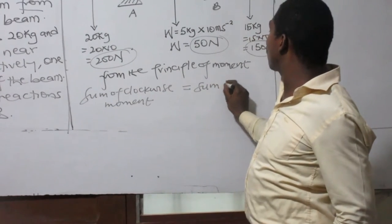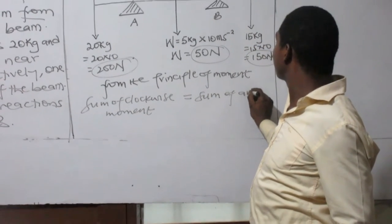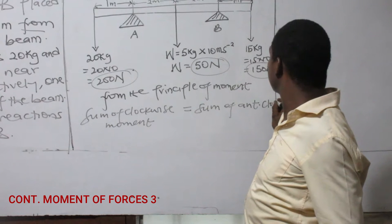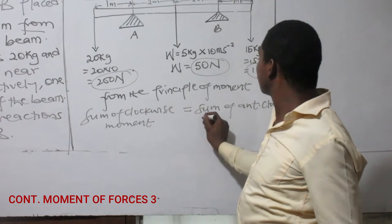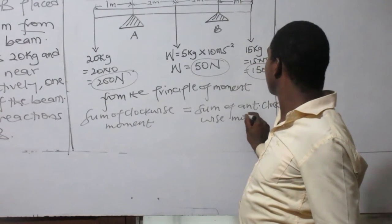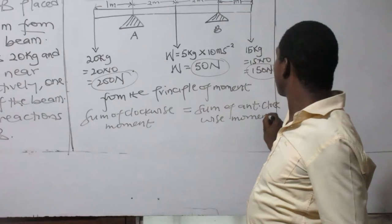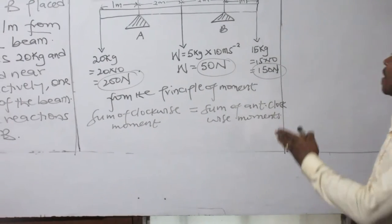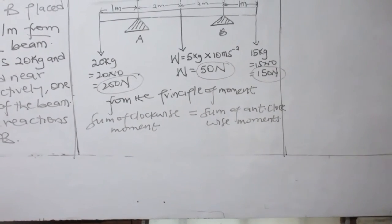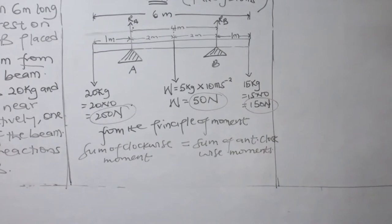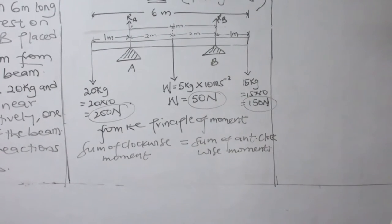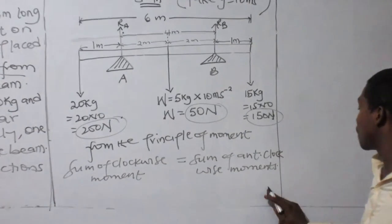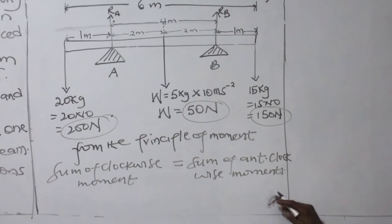The sum of clockwise moments equals the sum of anti-clockwise moments. Now we have two reactions here: Reaction A and Reaction B.